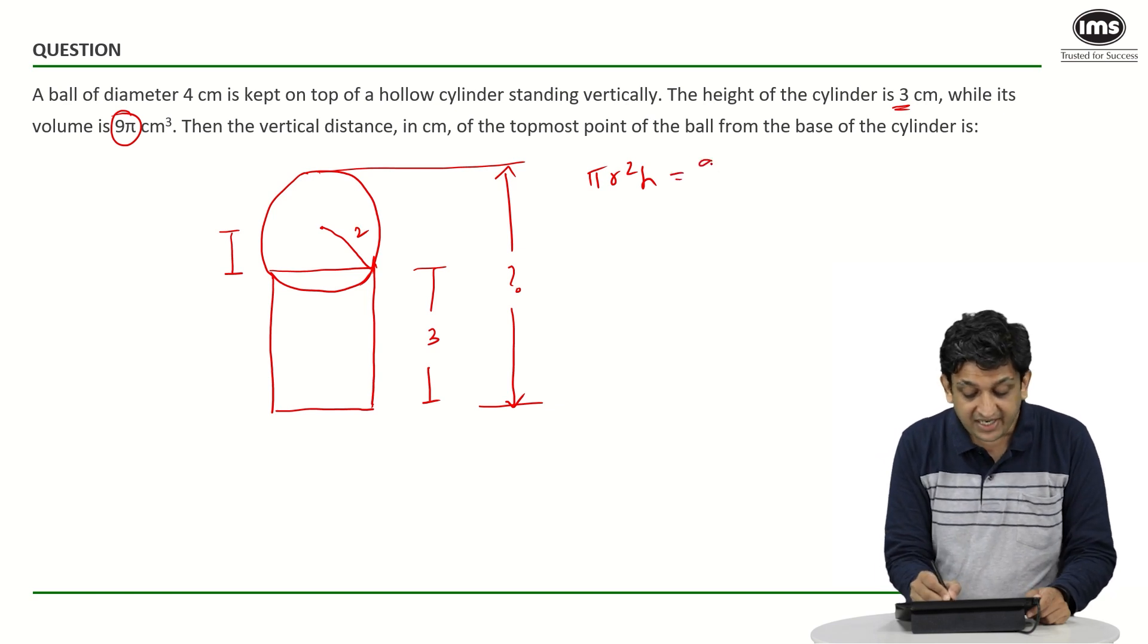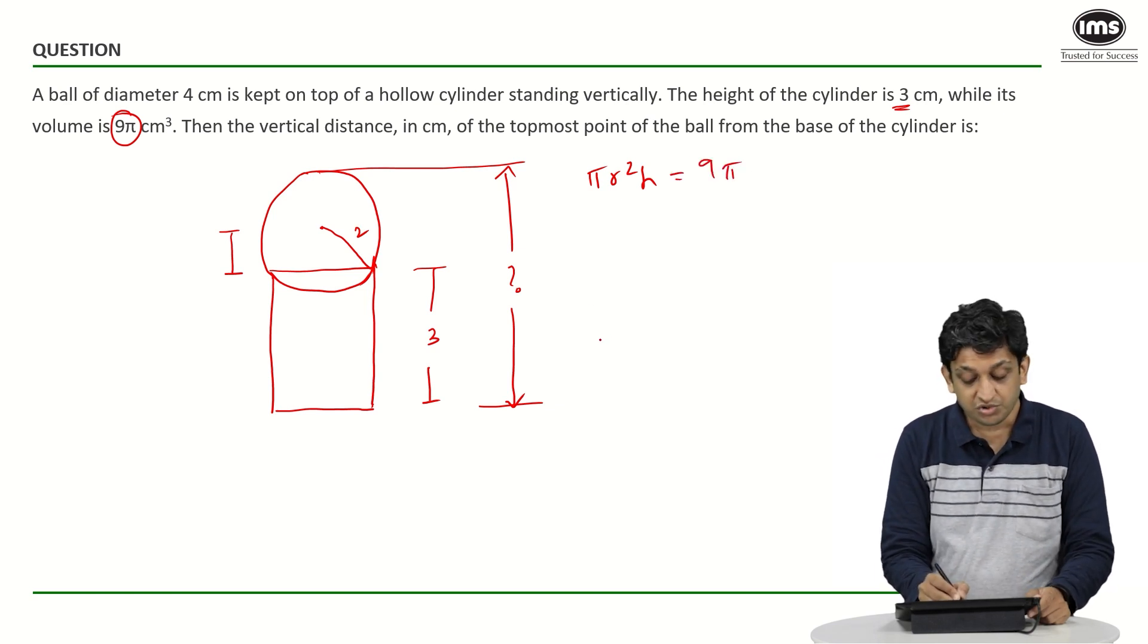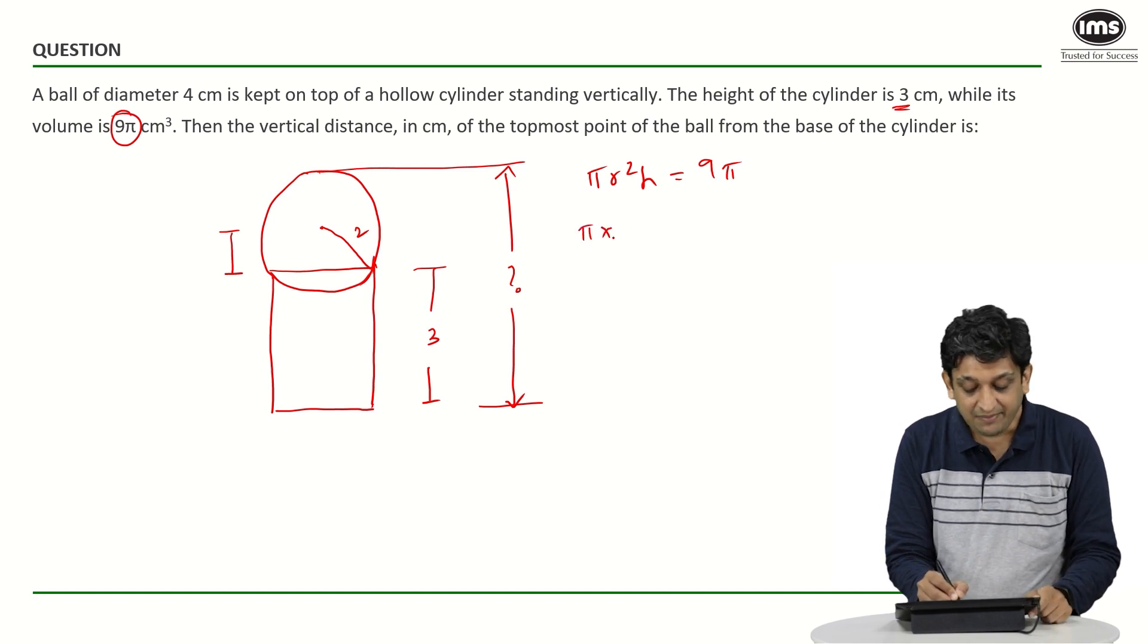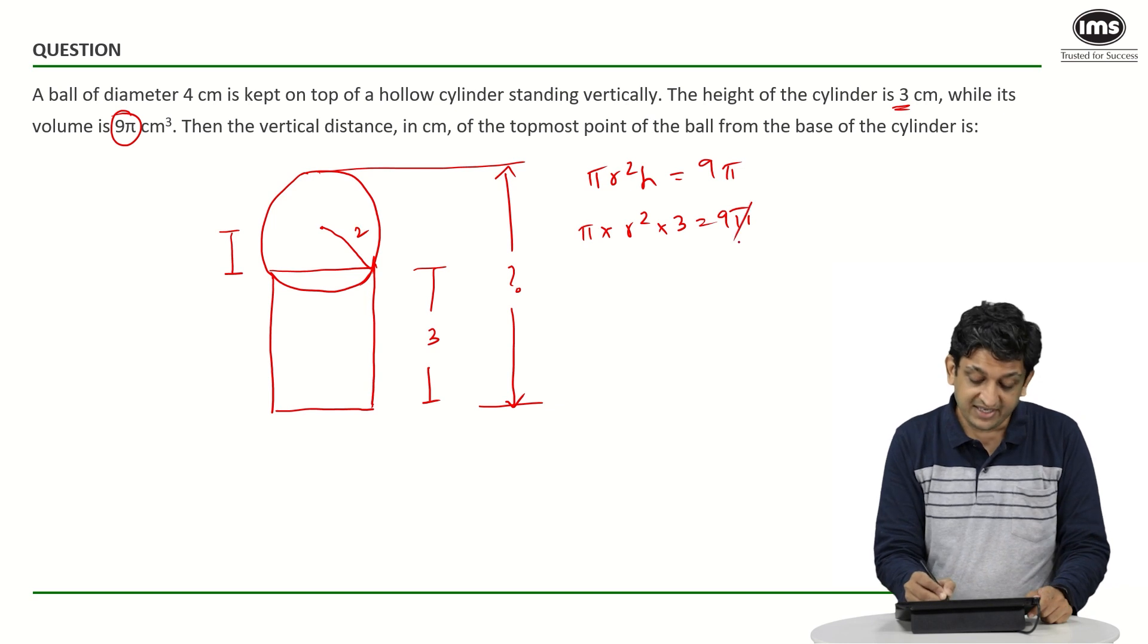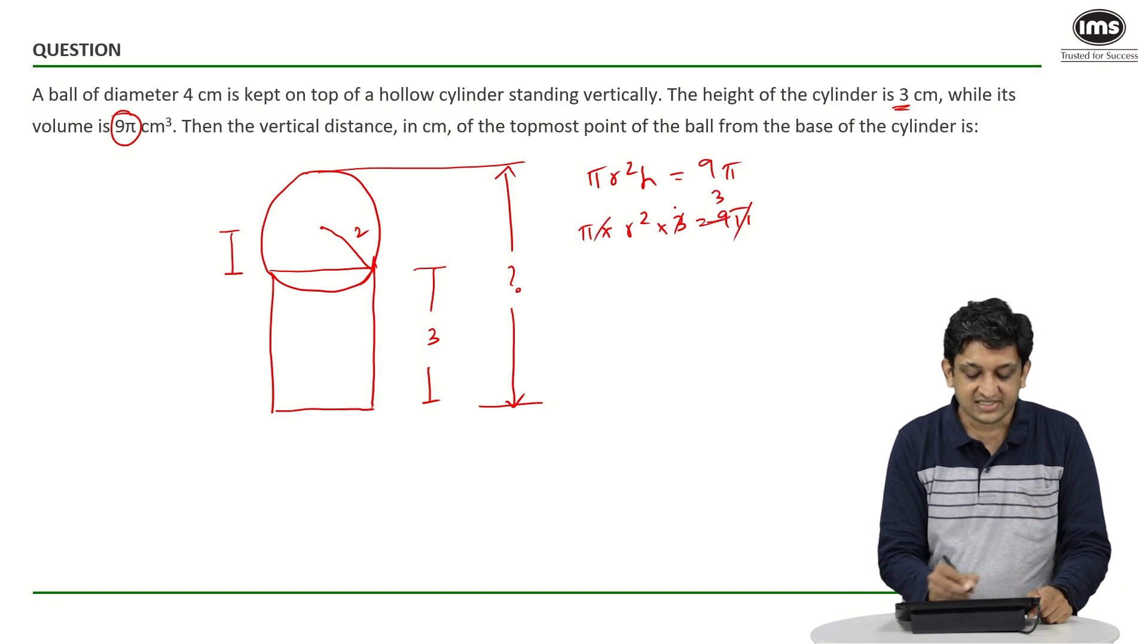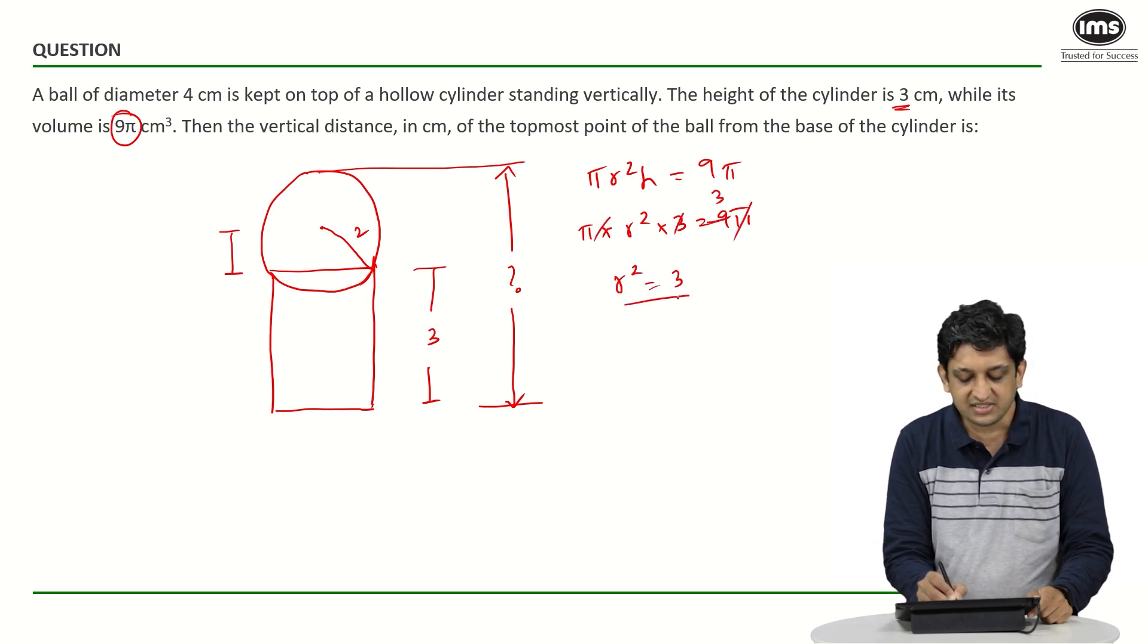So pi r square h is given to be 9 pi. We also know that height of the cylinder is 3. So we can say that pi into r square into 3 will be 9 pi. Pi will get cancelled out 1 3 will get cancelled out we will get r square equals 3.